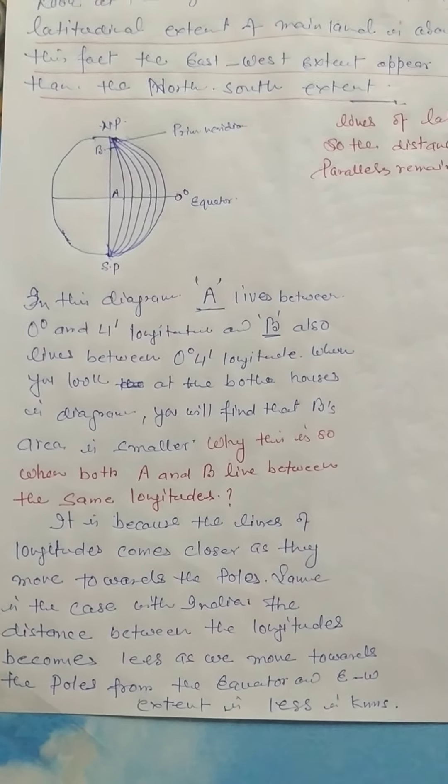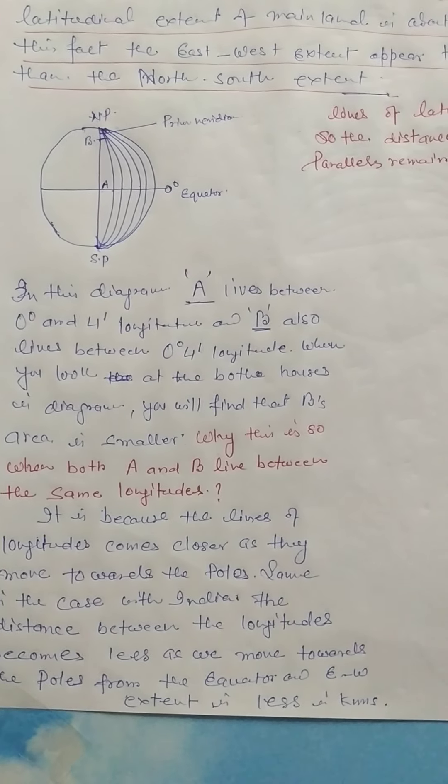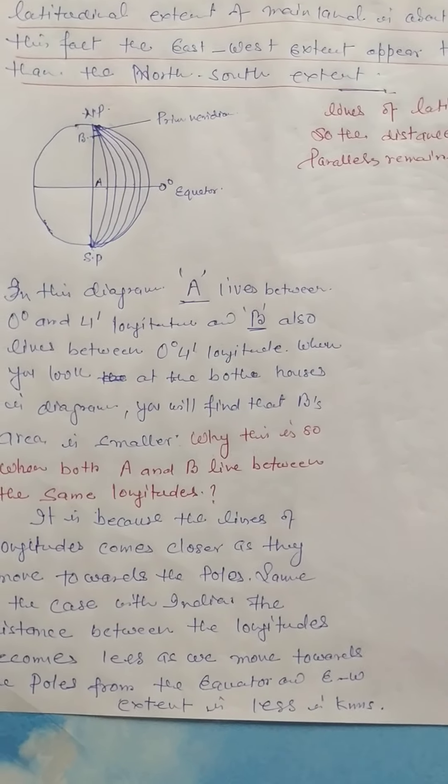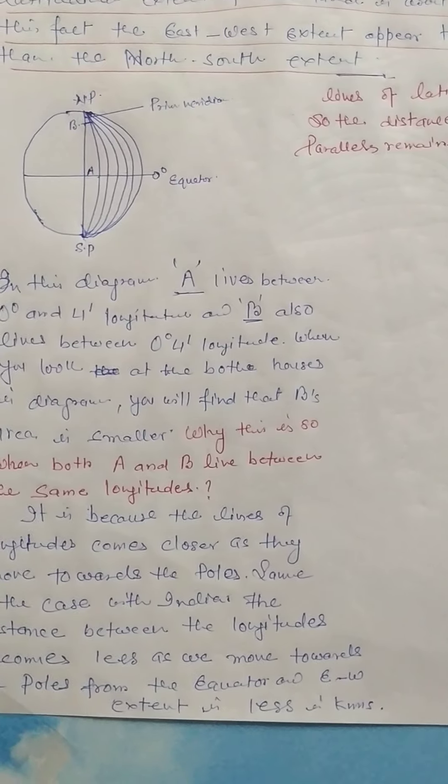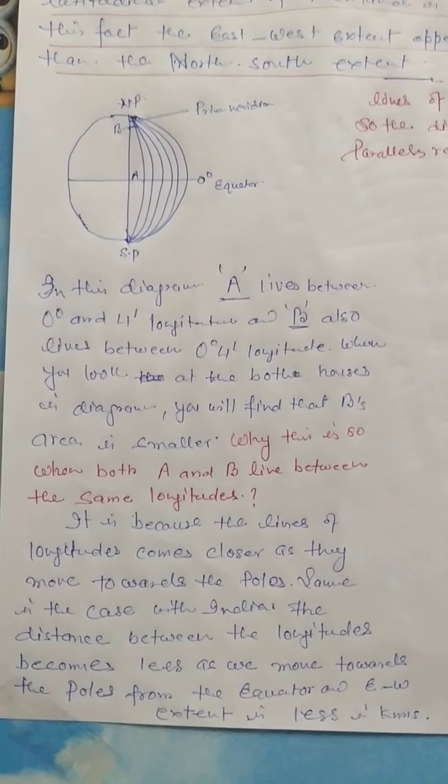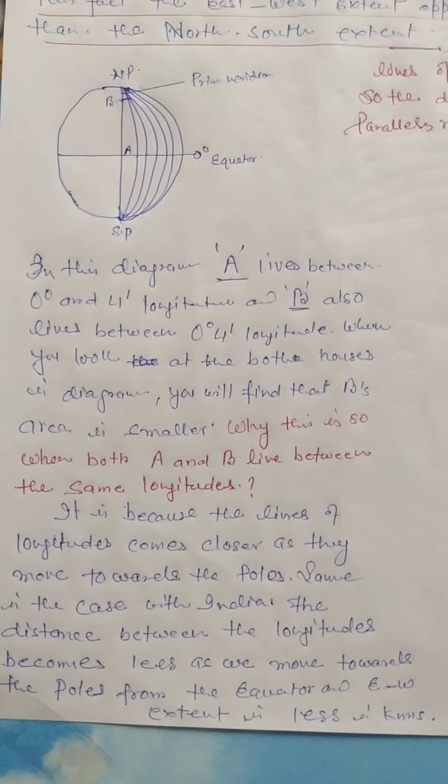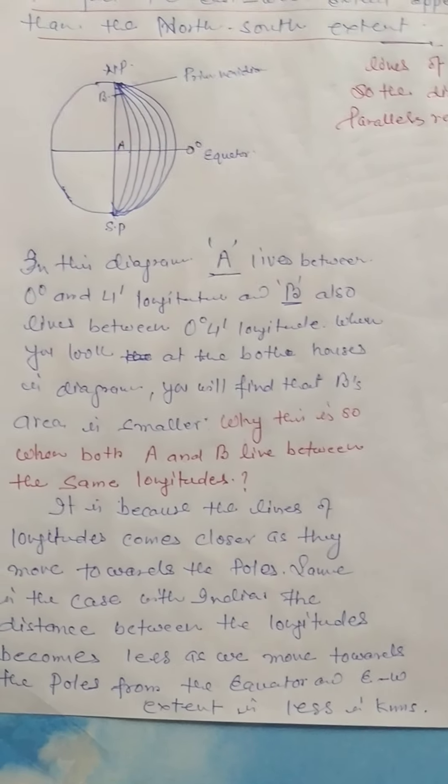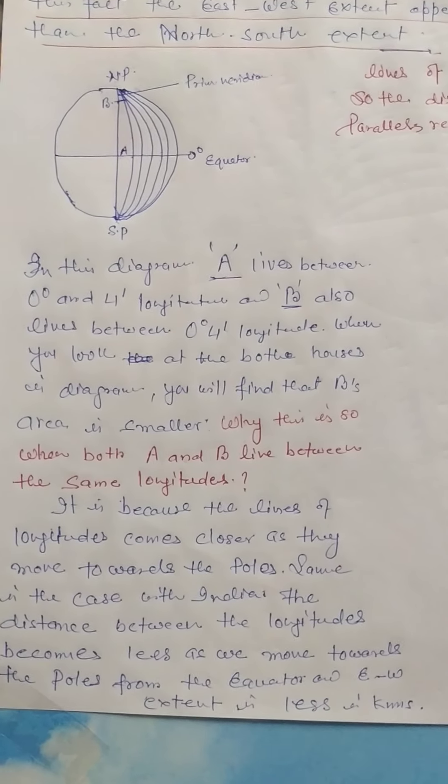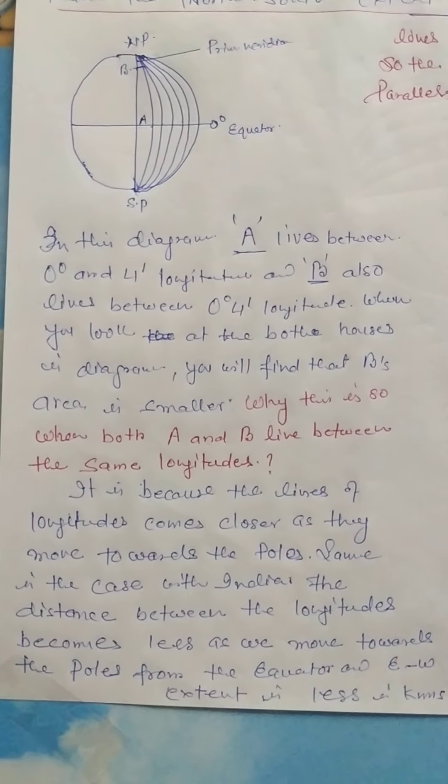For our understanding, first of all we try to understand the difference between longitude and latitude. As we know, latitudes are horizontal lines and they are known as parallels of latitude because each and every latitude is parallel to each other. They run parallel to each other but they never meet or cross each other.